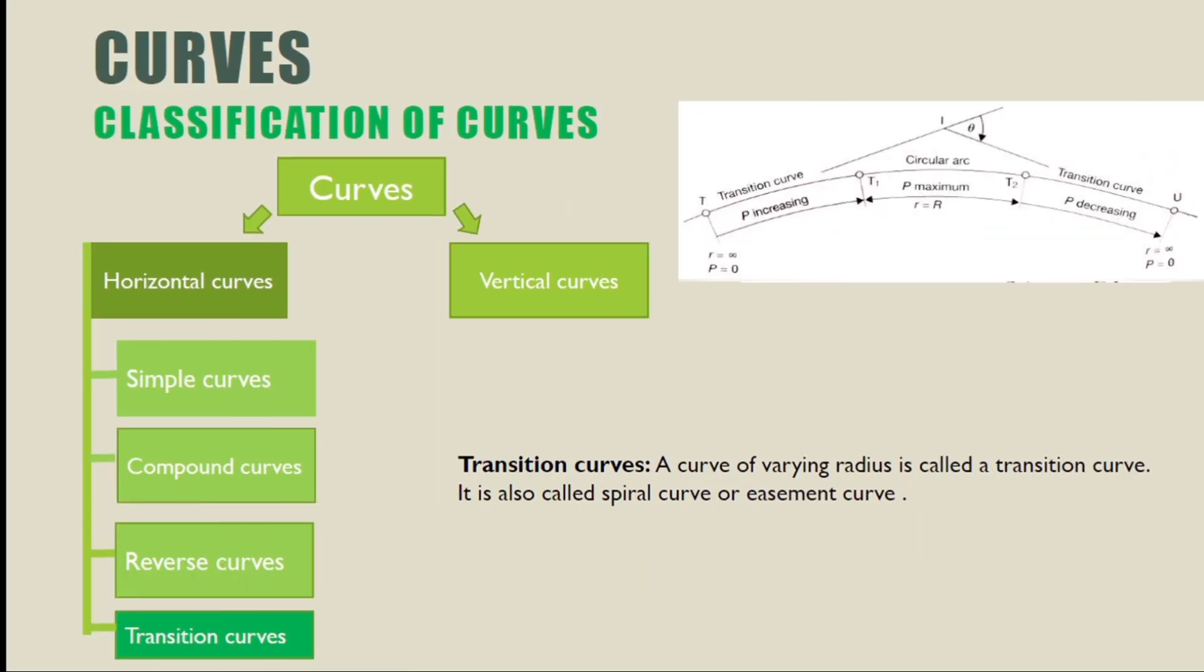Transition curves are curves of varying radii, also called spiral curves or easement curves.